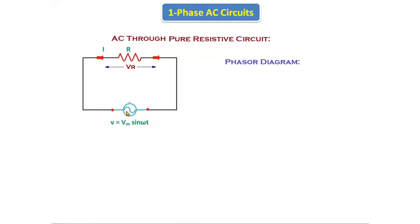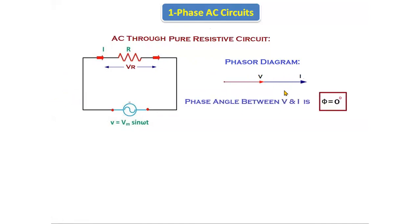If you see the phasor diagram, as we are giving AC supply to the pure resistive circuit, there is no phase angle difference between voltage and current. Voltage and current both are in the same phase. So from this we can say that the phase angle between voltage and current is zero degrees — phi is equal to zero.